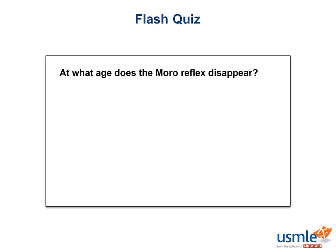Flash quiz! At what age does the Moro reflex disappear? The Moro reflex disappears at three months old.